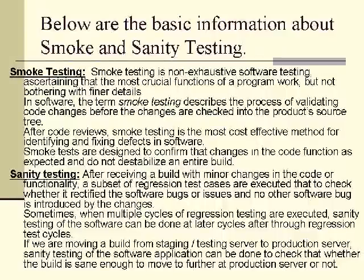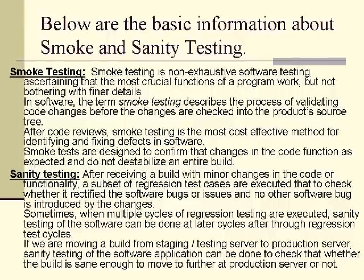A subset of regression test cases are executed to check whether software bugs or issues are rectified and no new bugs are introduced by the changes. When multiple cycles of regression testing are executed, sanity testing can be done at later cycles. After thorough regression test cycles, when moving a build from staging to production server, sanity testing can be done to check whether the build is ready for production.